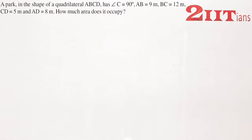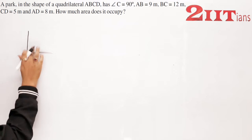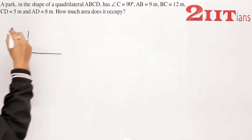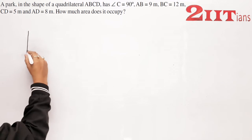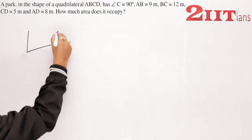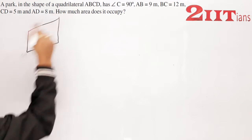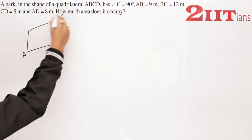तो देखिए, इसमें हम लोगों को एक quadrilateral दे रखा है। तो quadrilateral हमारा कुछ ऐसा है — A, B, C, D.